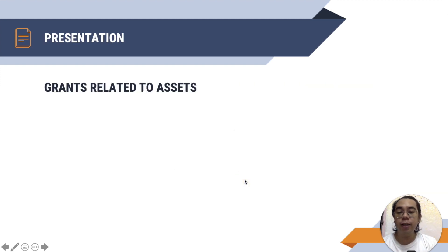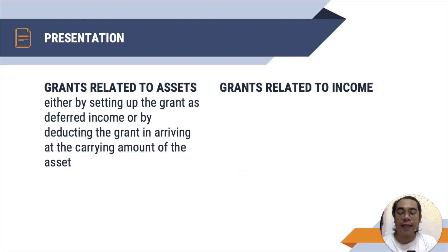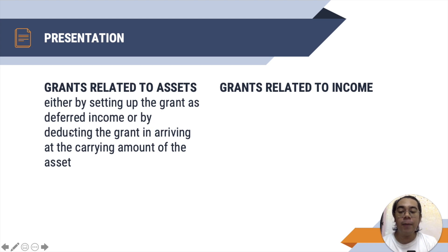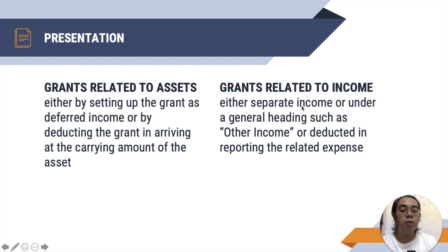For presentation of grants related to assets, you can either present it as a deferred income or liability account — slowly becoming income — or the grant should be deducted in arriving at the carrying amount of the asset. Using deferred income is called the gross method; deducting it from the carrying amount of the asset is the net method. For grants related to income, you can either use a separate income line or under a general heading such as other income, or it can be deducted in the related expense — gross or net method as well.